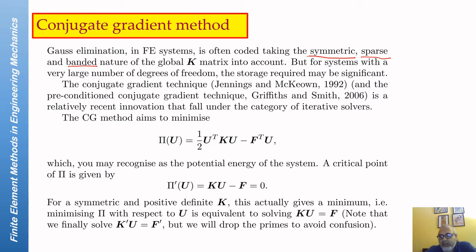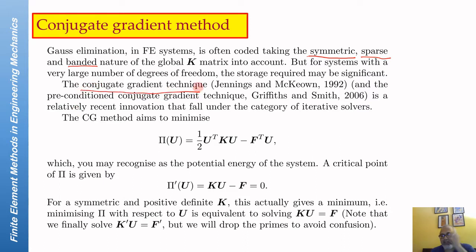the size of the stiffness matrix. In spite of all these sophistications, for problems with a large number of degrees of freedom, the storage required for the K matrix may be significant. With the advent of very powerful computers — especially with accessible parallel computing — iterative methods are becoming popular again. One of the most popular and most powerful iterative methods is the conjugate gradient technique. There is also a variation called the pre-conditioned conjugate gradient (PCG) technique, which we will also discuss.